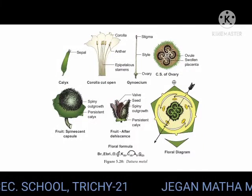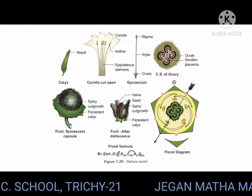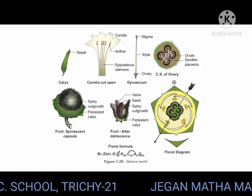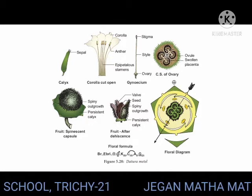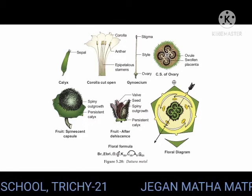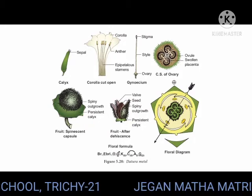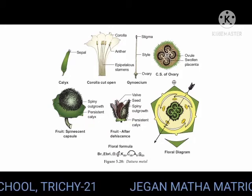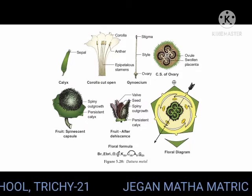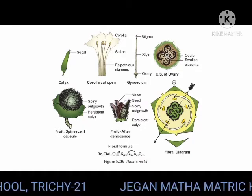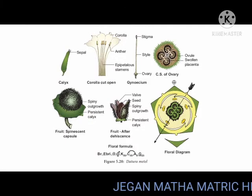Inflorescence: solitary and axillary. Flower: flowers are large, greenish white, ebracteate, ebracteolate, pedicellate, complete, heterochlamydeous, pentamerous, regular, actinomorphic, bisexual, and hypogynous. Hypogynous means the ovary is superior. Heterochlamydeous means it is having distinct calyx and corolla. Actinomorphic means we can divide the flower into equal halves in any plane.